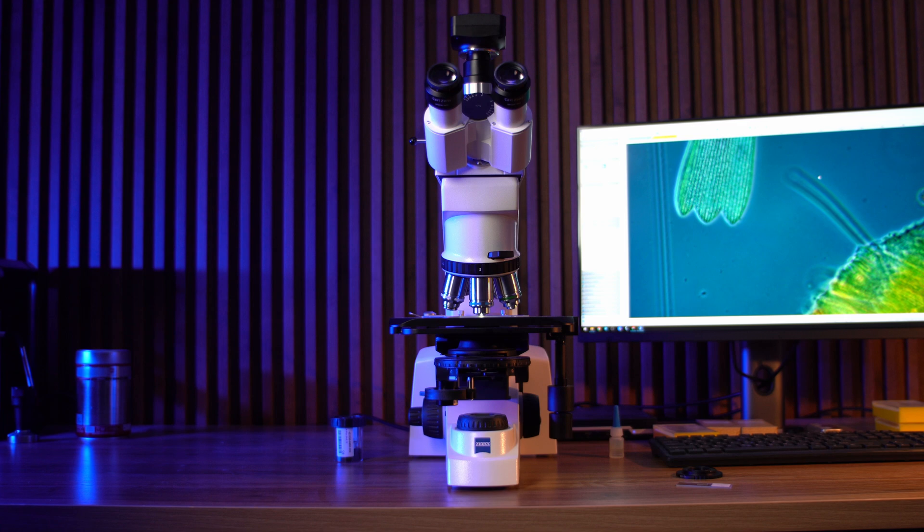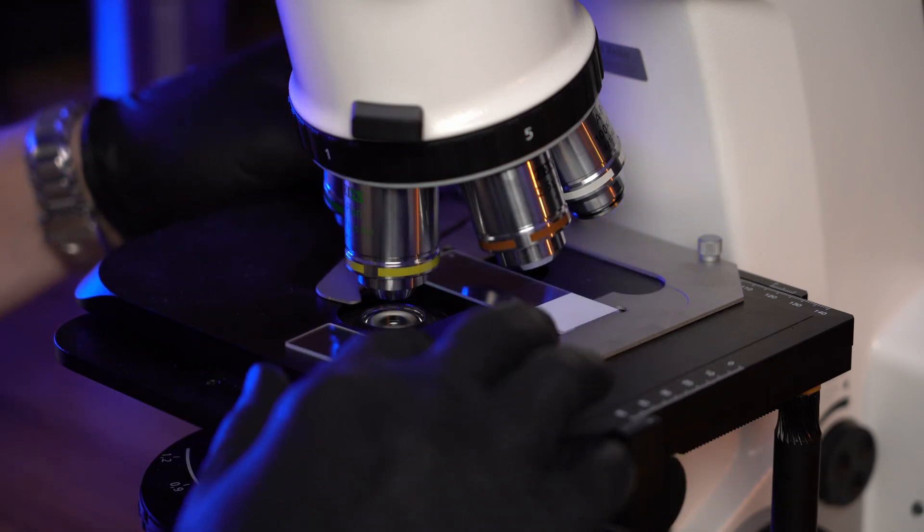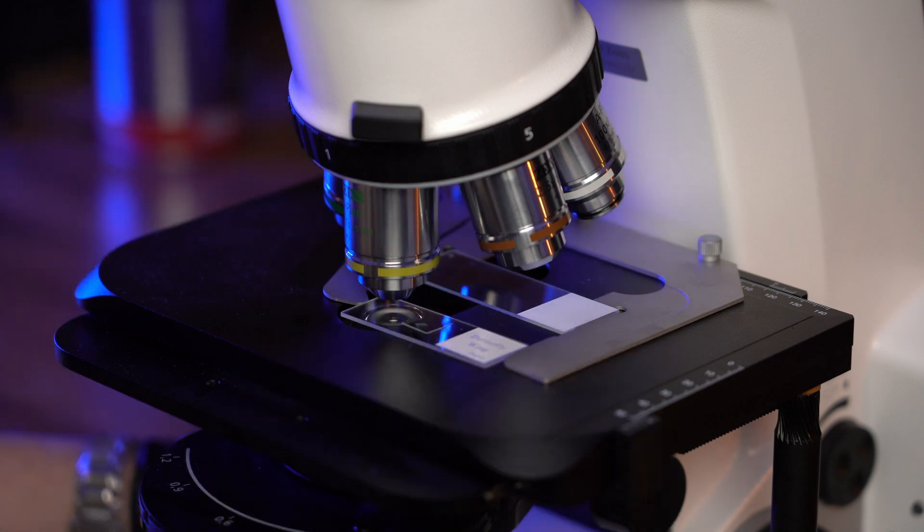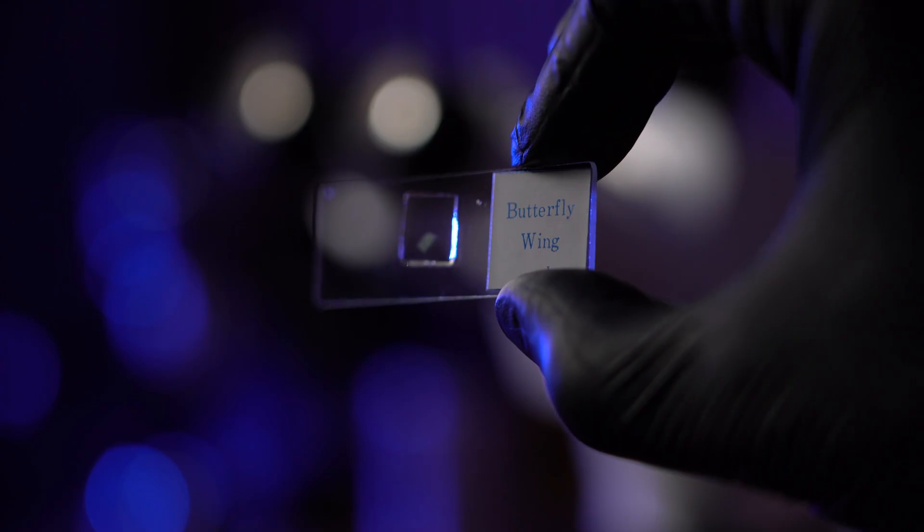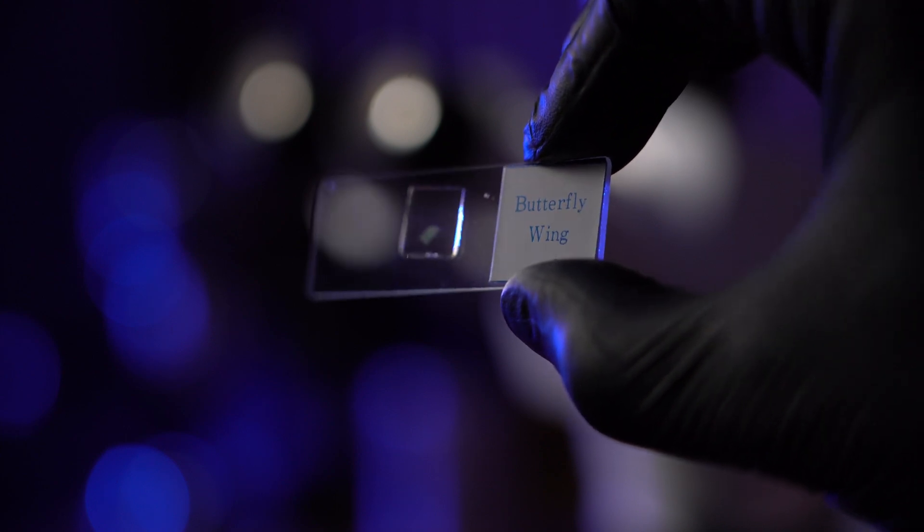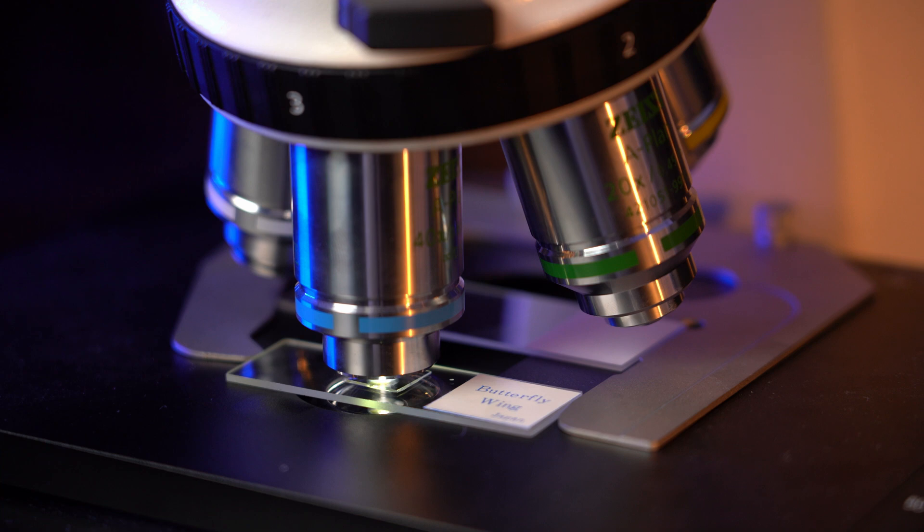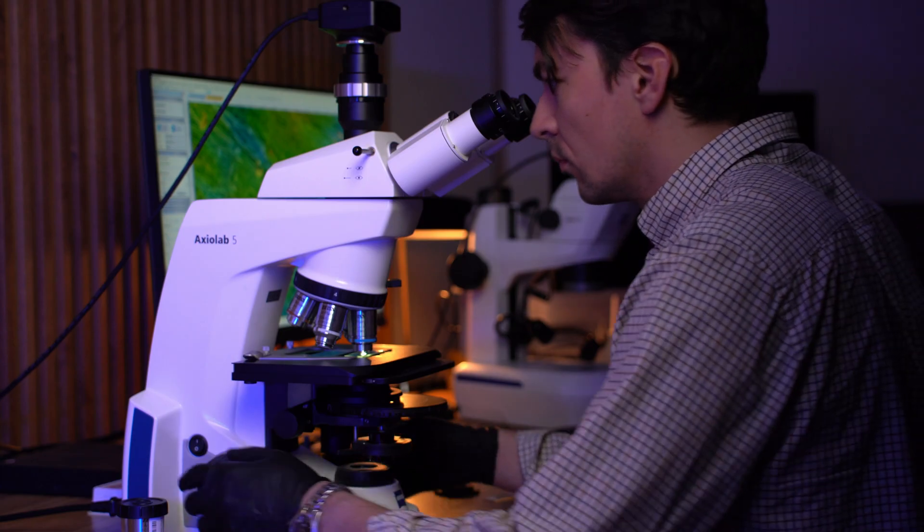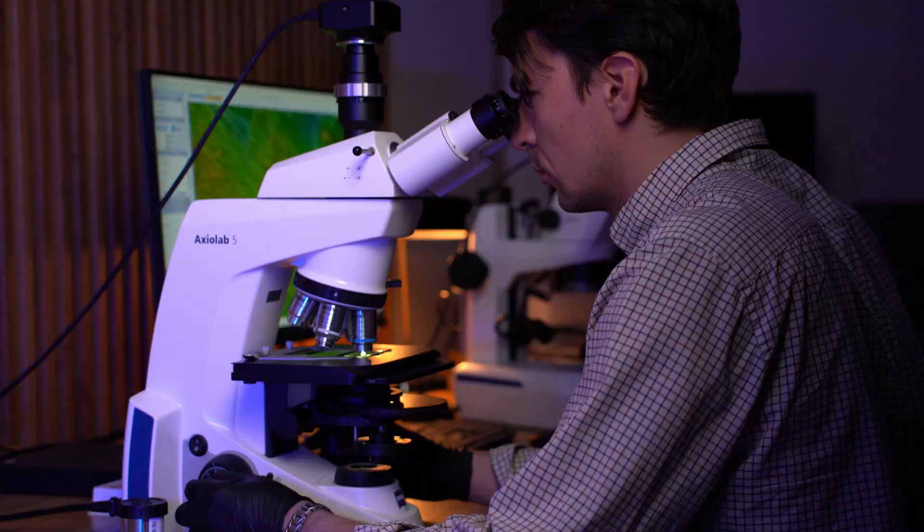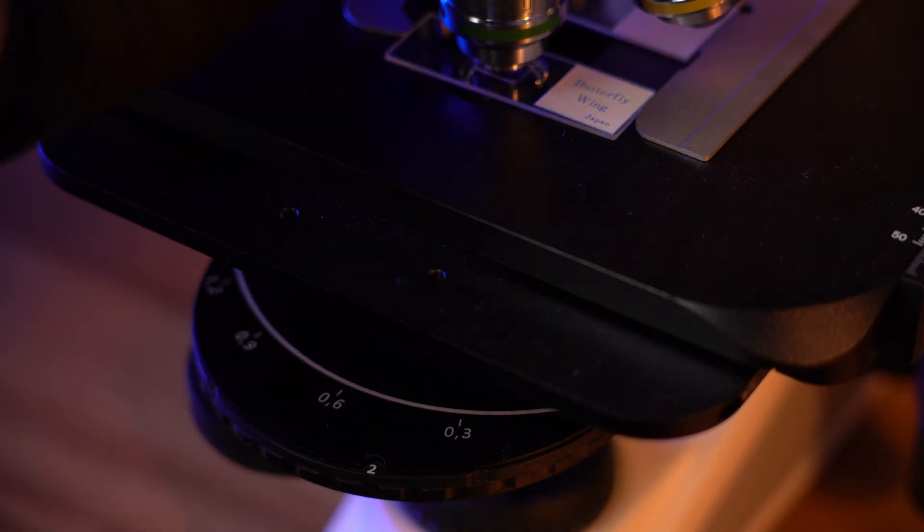Next up is the compound microscope, the classic lab microscope. To use it we need to prepare a proper slide. I've got a permanent slide from my Japan collection here, a butterfly wing mounted under a cover slip and fixed with Canadian balsam. Standard magnification here goes up to 400, and with a special oil called immersion oil we can push that to 1000 times. We also have ways to enhance contrast like using phase contrast techniques.